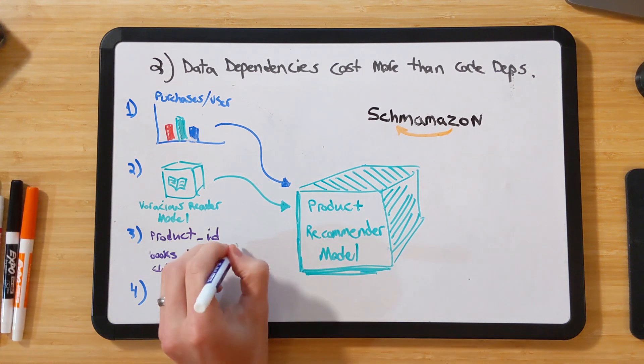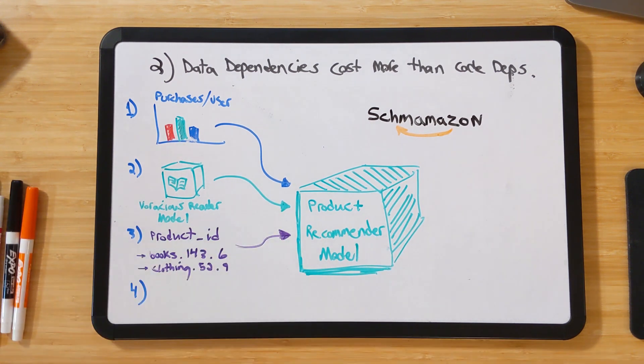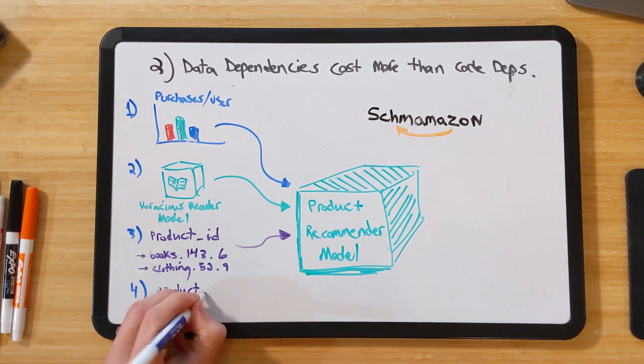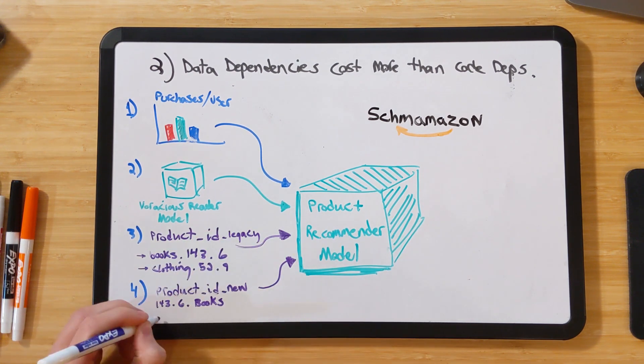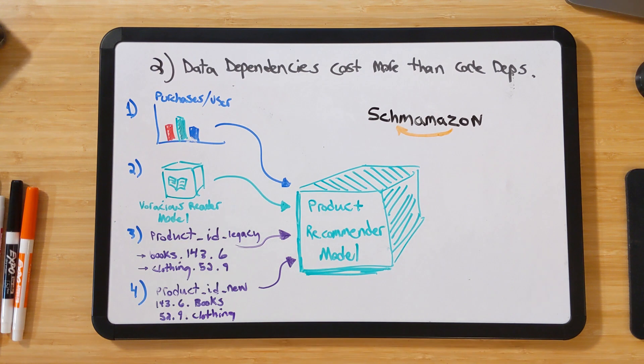A third signal might be the product identifier or ID, which encodes things like the product category, including whether or not the product is a book or a clothing item, or maybe an electronic item. However, because software changes over time, that product ID system may have changed recently, so we could even have a fourth input corresponding to that new product ID, whereas the first one is the legacy product ID.